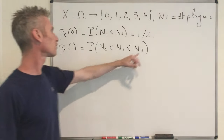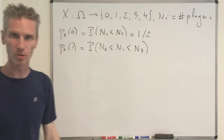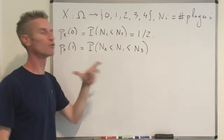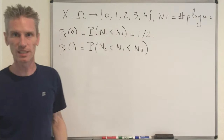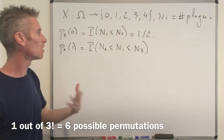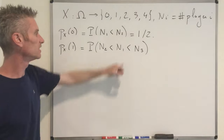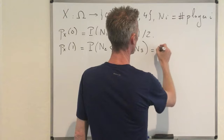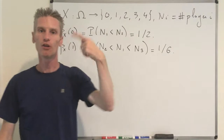Because all five factorial possible orderings of the five numbers are equally likely, all three factorial possible orderings of those three extracted numbers are also equally likely. We have one specific ordering out of 3 factorial equals 6 possible orderings, so the probability is 1 over 6. That comes from 1 divided by 3 factorial.